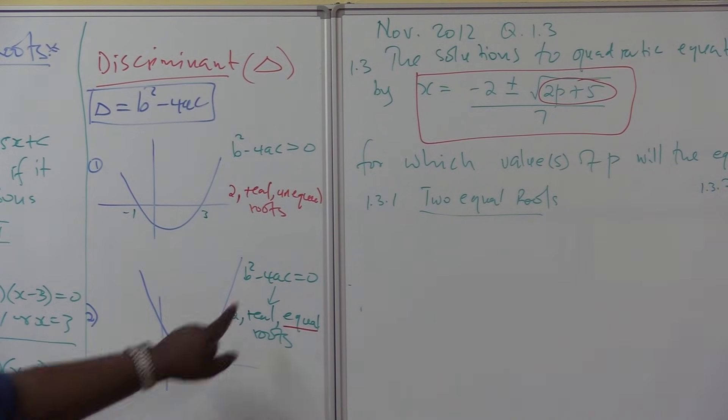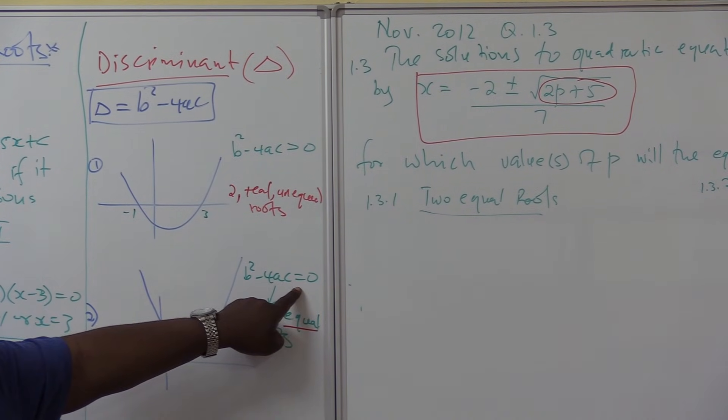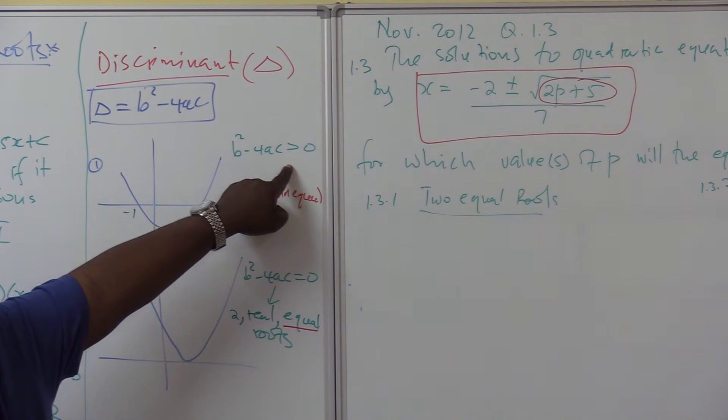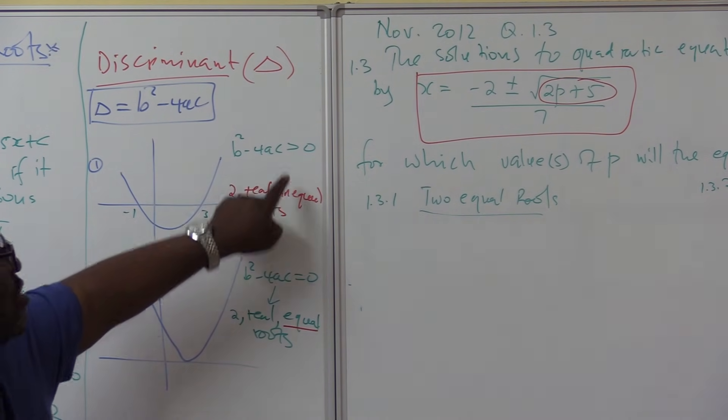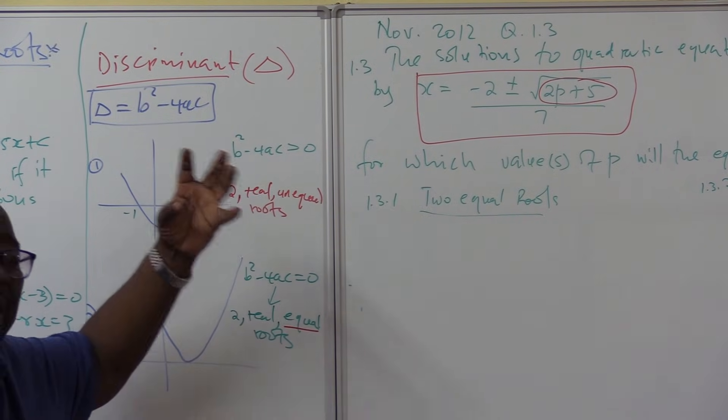Because when we say value, you'll definitely know that it's equal sign. But when we say values, it will be inequality sign. So we don't want to show you exactly where the solution is. That's why we include value or values.